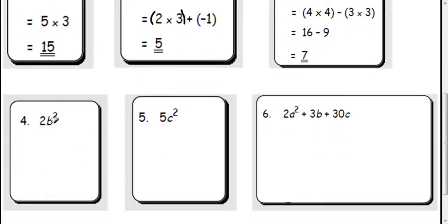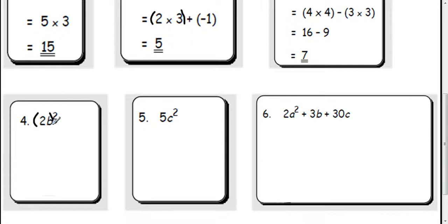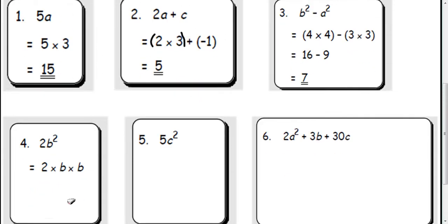2b squared. Now what that means is, it means 2 lots of B times B. It doesn't mean you do 2 times B and then square your answer. That would look like this with brackets around it. You have a bracket there and then a bracket there. That would be 2 times B and then square your answer because you do the brackets first. But this is really just 2 lots of B times B.